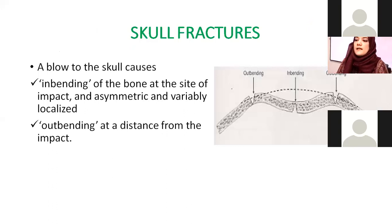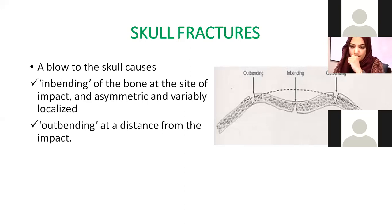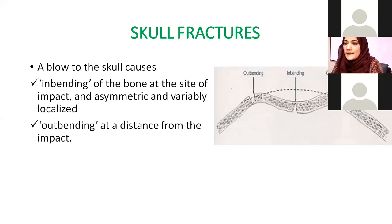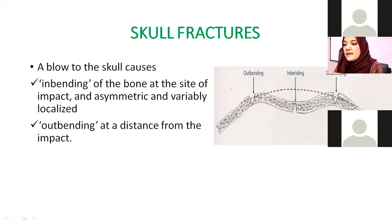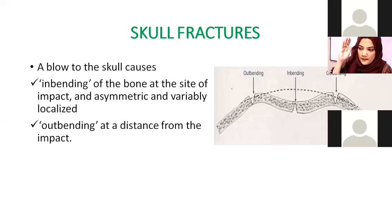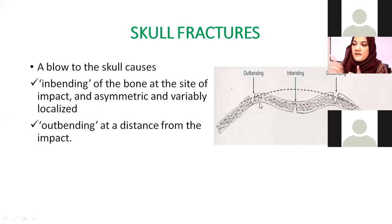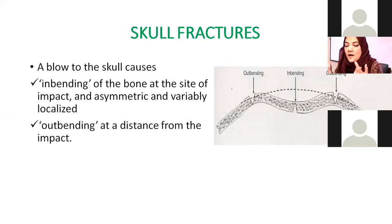Any blow to the skull may result in two types of presentation: inbending of the bone and outbending of the bone. With inbending, there is a direct impact at one area, causing local asymmetric deformity and a localized fracture at that point. With outbending, the fracture appears in the surrounding area rather than directly at the impact site — the surrounding bone bends outward and fractures. This is known as an outbending fracture.